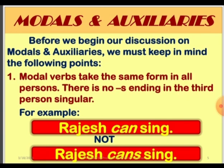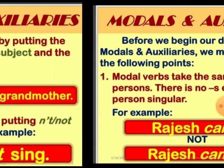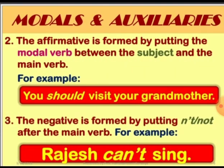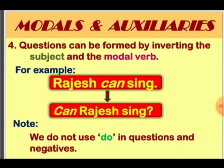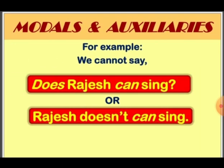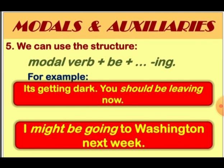Before we begin our discussion on modals and auxiliaries, we must keep in mind the following points. First, modal verbs take the same form in all persons — there is no 's' ending in the third person singular. The affirmative is formed by putting the modal verb between the subject and the main verb. The negative is formed by putting 'not' after the modal verb, for example: Rajesh can't sing.